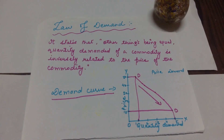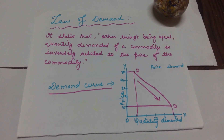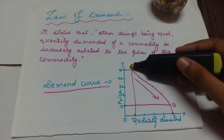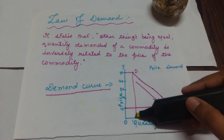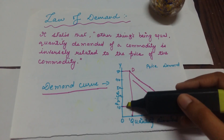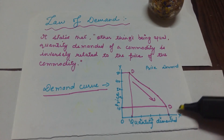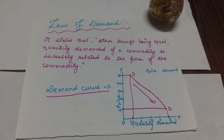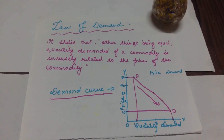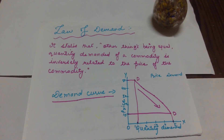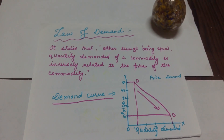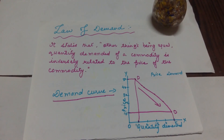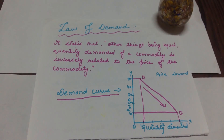The demand curve is always downward sloping — it is always negative. When you have a maximum price of 50 rupees, your demand is minimum. And when your price is minimum, say 10 rupees, your demand is maximum. So the Law of Demand means: greater the price of the commodity, lesser the demand of the commodity; lesser the price of the commodity, greater the demand of the commodity.